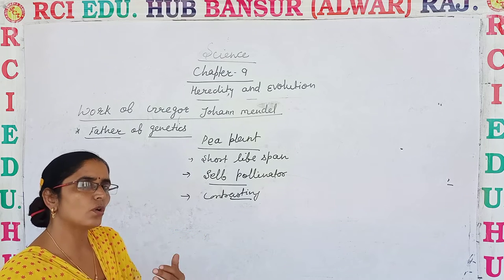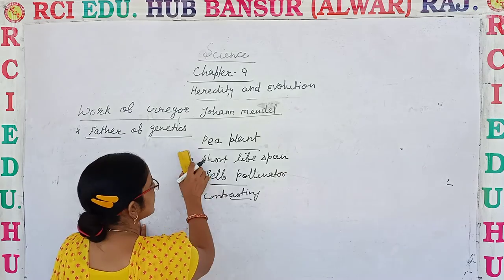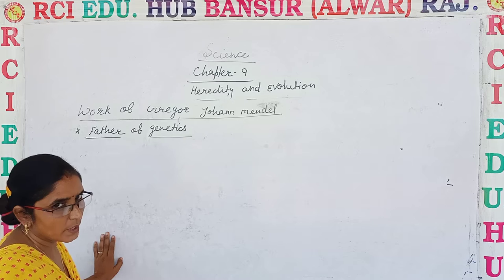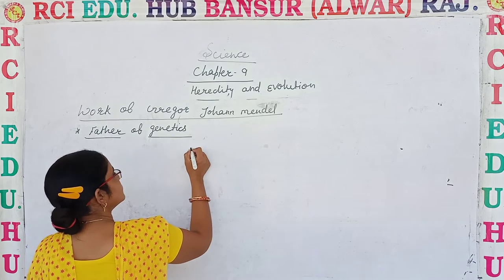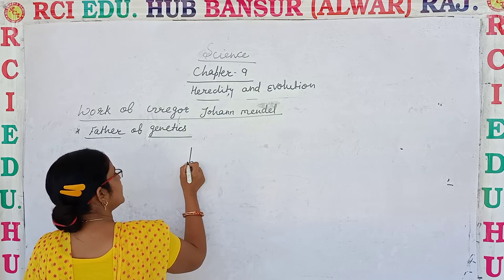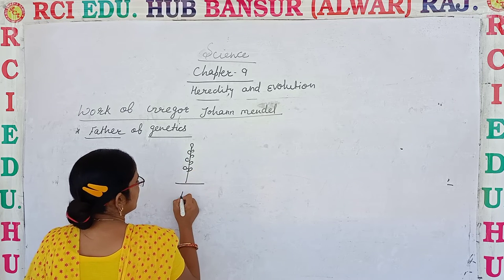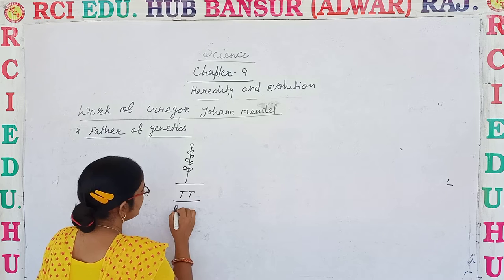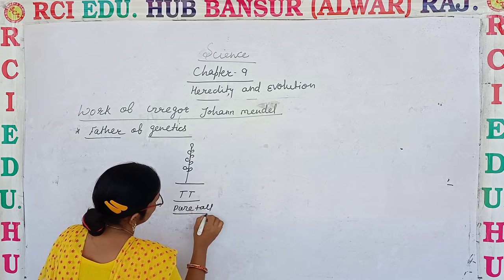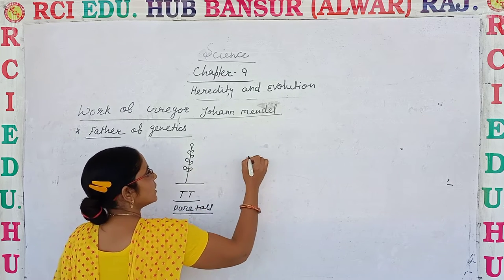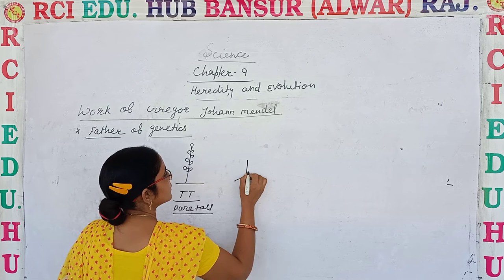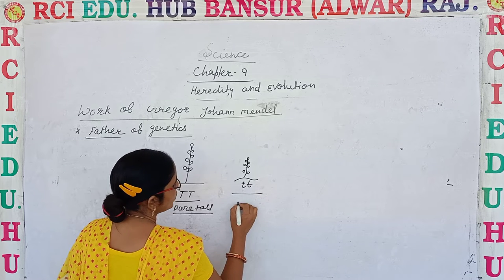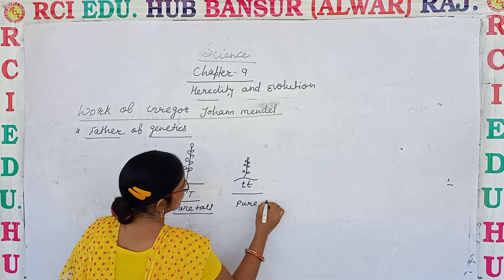For some reason, Mendel chose the pea plant for doing his experiment. He used plants with contrasting traits. The first plant was a tall pea plant, whose genotype is capital T capital T — meaning he took a pure tall plant. The second plant was a dwarf plant, whose genotype is small t small t — that is known as pure dwarf.